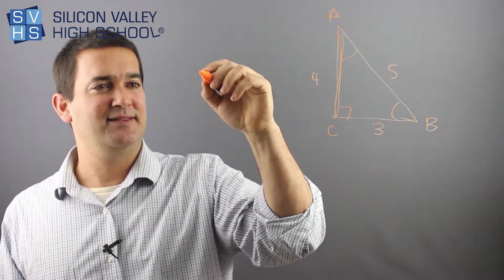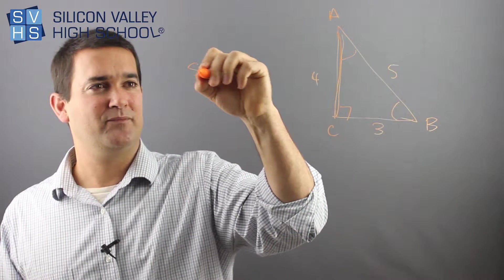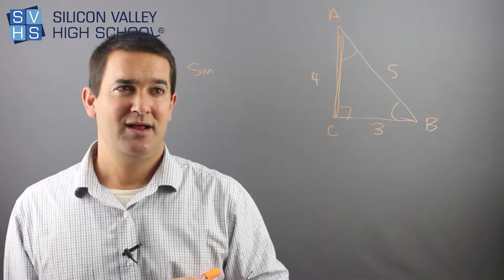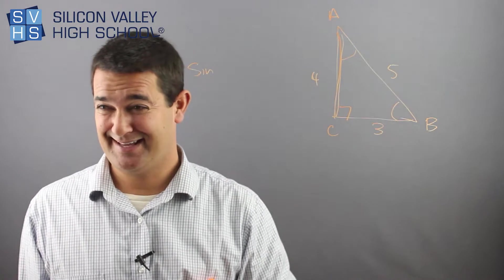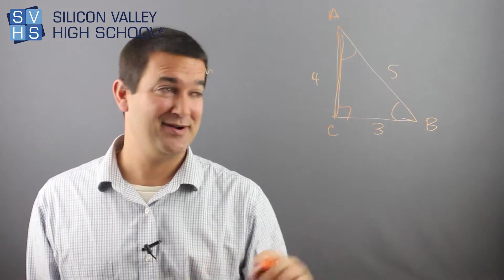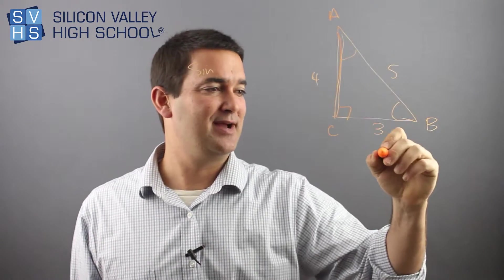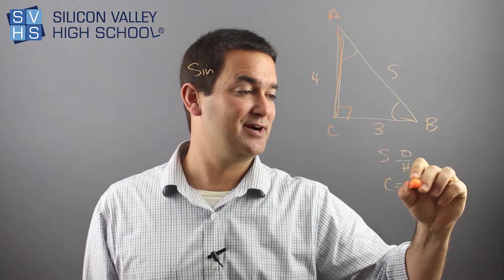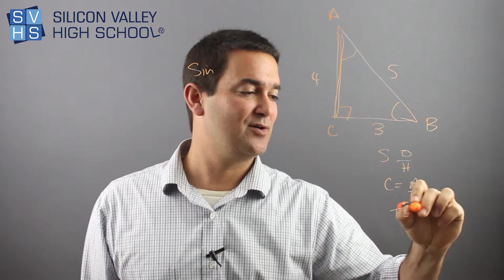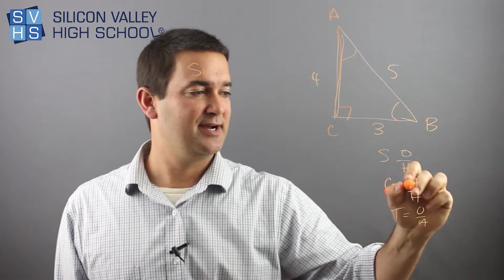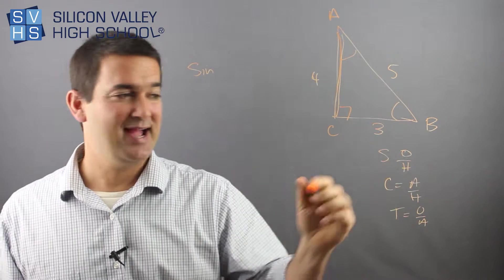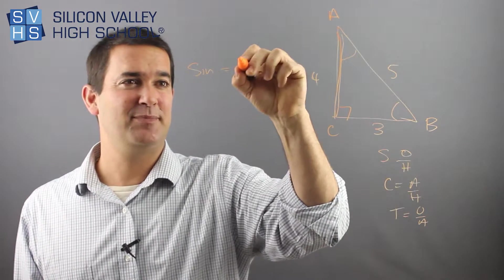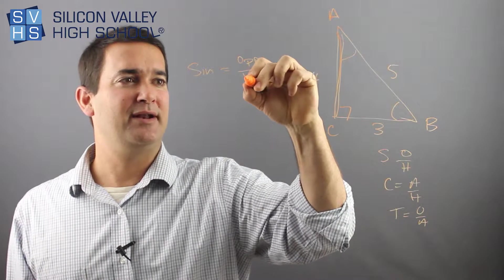If you were asked to find the sine of something, right, of A or B, the sine, there's this famous poem, or is it like an acronym? I don't know. It's SOH-CAH-TOA, right? And people use this to memorize what sine, cosine, and tangent are, okay? So here's the whole SOH-CAH-TOA. Sine is opposite over hypotenuse, hence the O and the H. Sine is opposite over hypotenuse, okay?